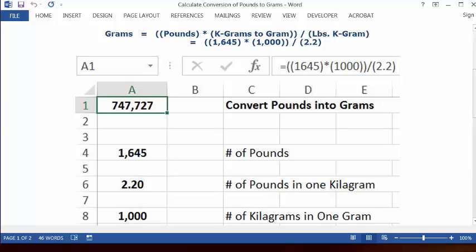Equal sign, two open parentheses, 1,645, close parenthesis, multiplication key, open parenthesis, 1,000, two close parentheses, division key, open parenthesis, 2.2, close parenthesis, and then press enter.